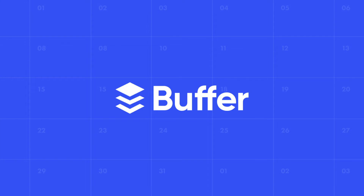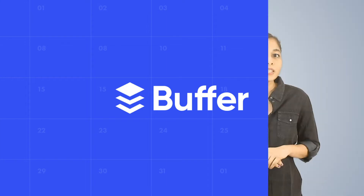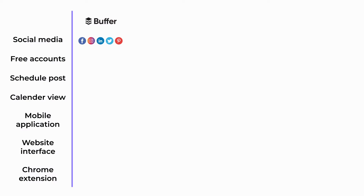When it comes to post scheduling tools, you'll find no better tool than Buffer, especially when you want to get your work done without paying a penny. Buffer supports five social media channels: Facebook, Instagram, LinkedIn, Twitter, and Pinterest. Although with a free account, you can only connect three social media accounts, which means you can choose any of these platforms to schedule your posts.